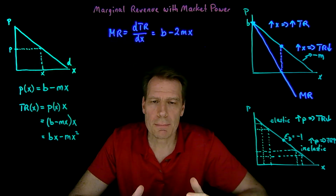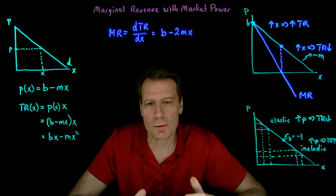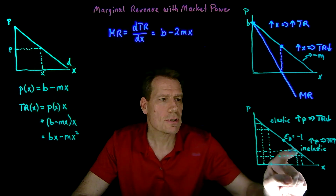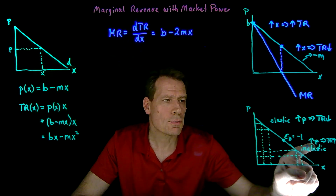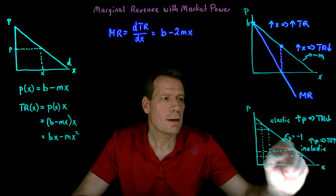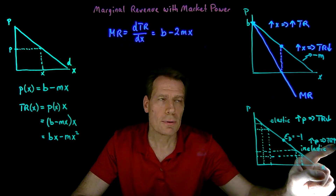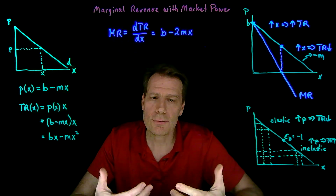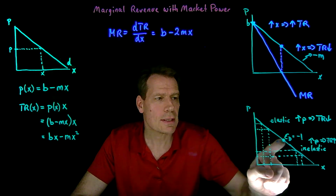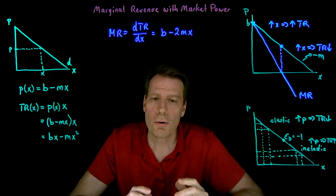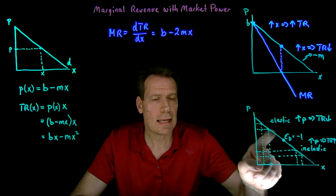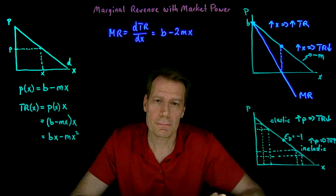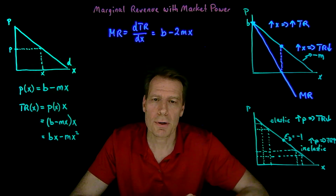This tells us something important about where a firm with market power is not going to produce. A firm with market power is not going to produce on the inelastic portion of demand, because if it ever did, it could raise price and lower quantity — both of which would increase total revenue. If you can produce less and increase your revenues, you will certainly do that. Firms with market power are always going to produce on the elastic portion of demand, where increasing price would cause total revenue to fall. They would never be on the inelastic portion.